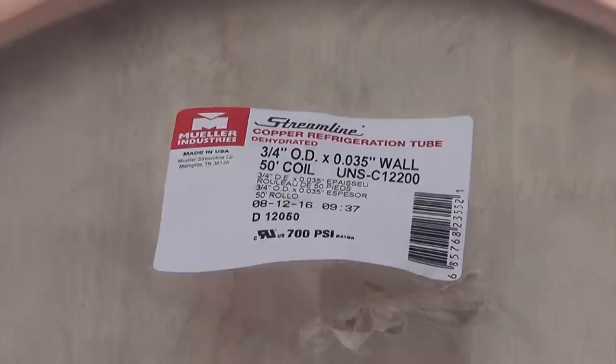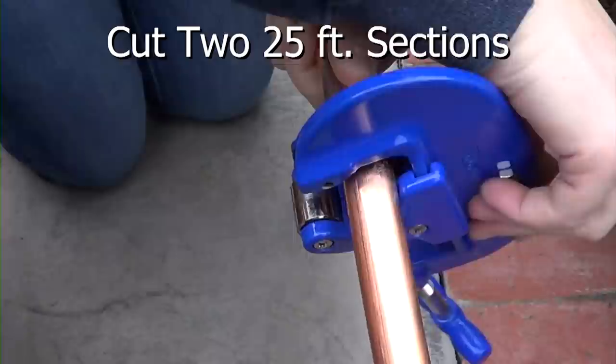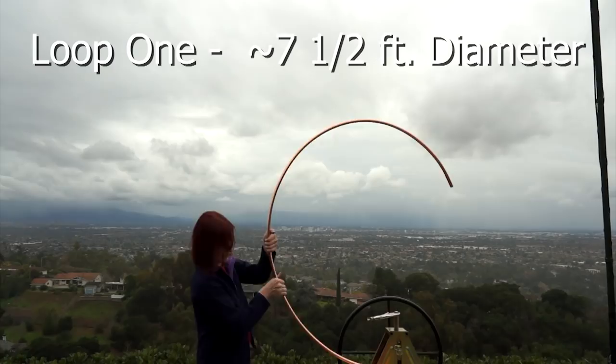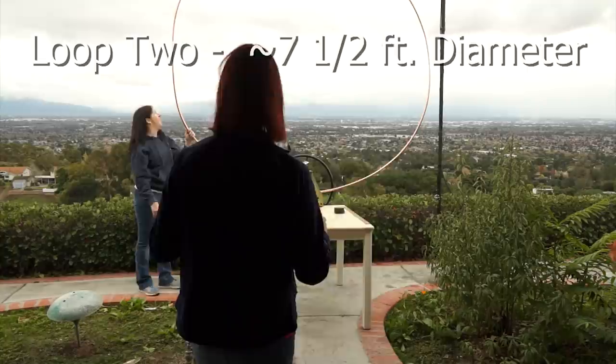You'll want to find 50 feet of copper pipe. In our case, we found some low-cost three-quarter inch. The bigger the diameter, the better. Resistance is your enemy in a magnetic loop antenna and will reduce your efficiency. You'll cut the 50-foot length in half, and then you'll start to roll it into two seven and a half foot circles. This is really awkward. Don't worry if there's some little wavy bits. You can correct that later. Just be careful not to kink the tubing.